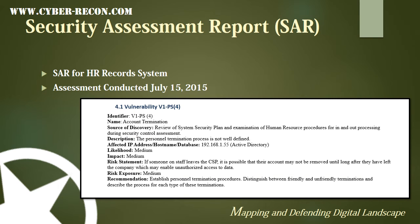For this example, the finding will be uncovered during a security assessment for the HR Record System conducted on July 15, 2015. We will be looking at one individual weakness identified in this slide, which is B1 — PS-4, account termination. It looks like the account termination process is not functioning correctly in this agency. We will use some of the information contained in this vulnerability write-up to start our POAM.